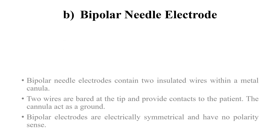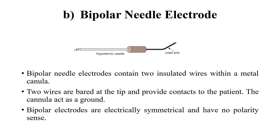Now we will discuss the bipolar needle electrode. The figure shows this electrode — from the name, we can say that two wires are placed within the lumen of the needle and connected differentially. Bipolar needle electrodes contain two insulated wires within a metal cannula. A cannula is a tube that can be inserted into the body of the patient — for example, during delivery or to take fluid samples. The two wires are bent at the tip and provide contact to the patient, while the cannula acts as a ground. Bipolar electrodes are electrically symmetrical and have no polarity sense.